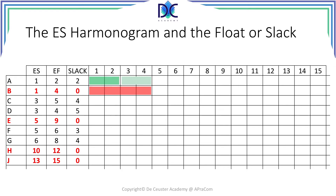Activity C starts on period 3, finishes on period 5, and has a slack of 4. Activity D also starts at period 3 but finishes on period 4 and has a slack of 5. Another critical path activity, E, starts in period 5 and ends at period 9.